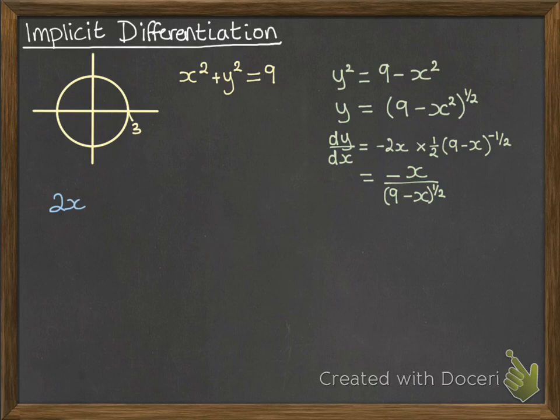Now we get a little problem when we get to y squared. We can't differentiate that with respect to x because it's not a term that's defined in terms of x. It's a y term. What we can do is this. So that y squared, if we try to differentiate it, but with respect to y, that would look like this.